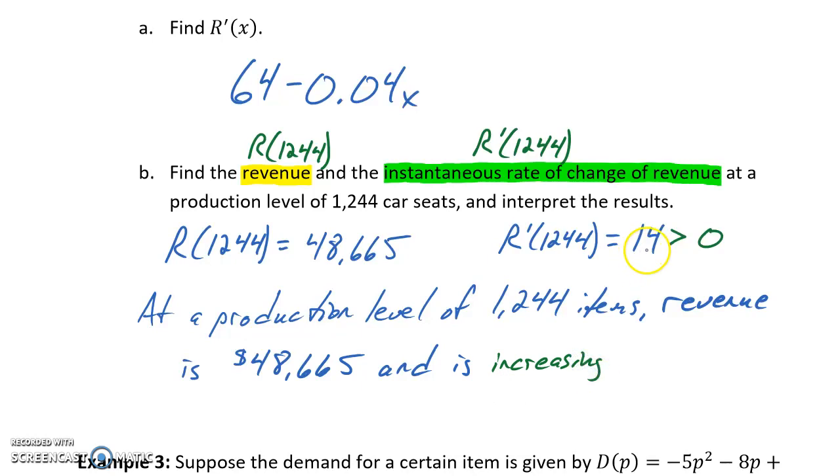And we would say increasing because our marginal revenue function evaluated at this production level is positive. So our revenue is increasing at a rate of $14 per item. So every time we increase production by one unit, our revenue will increase by approximately $14.